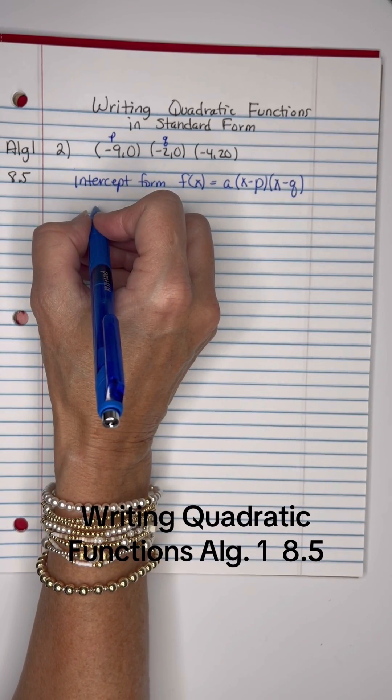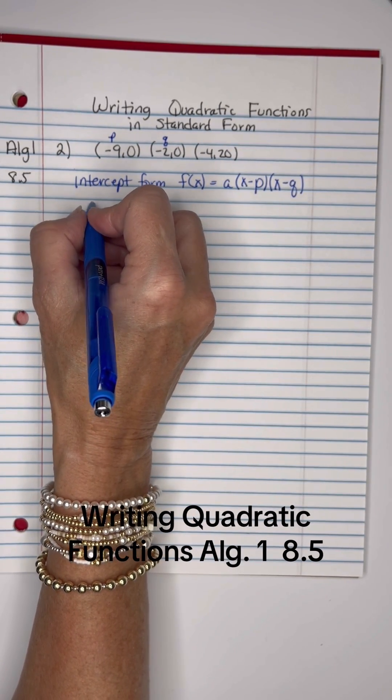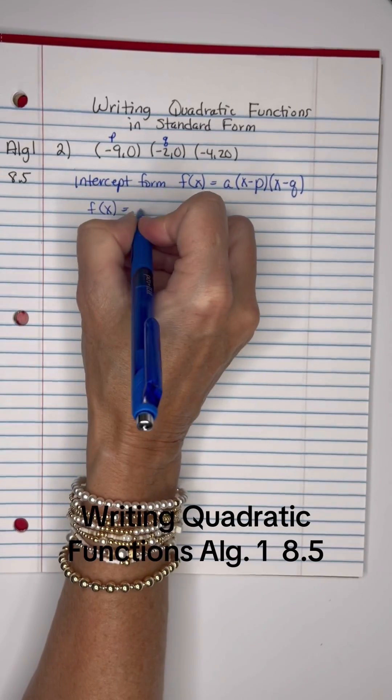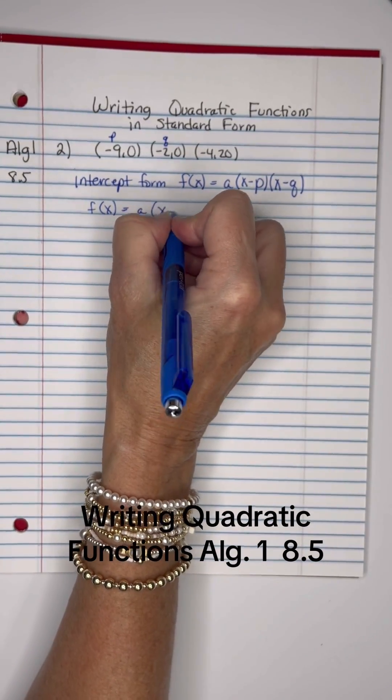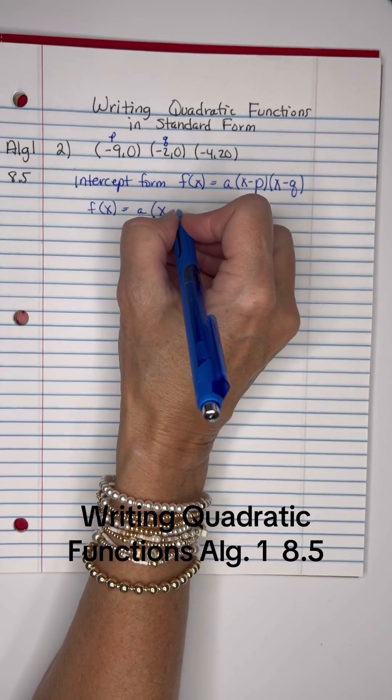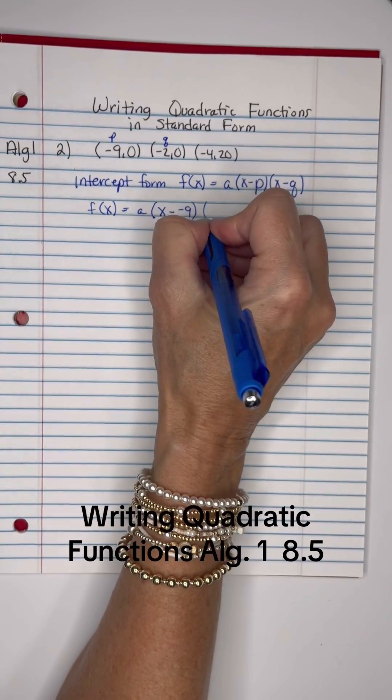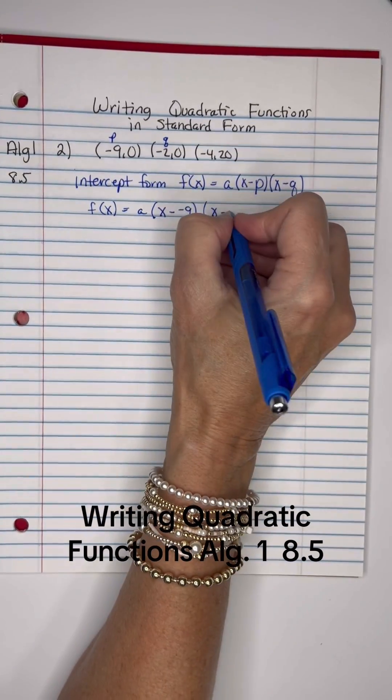So let's write down f(x) equals a times x minus – and I have negative 9 – times x minus negative 2.